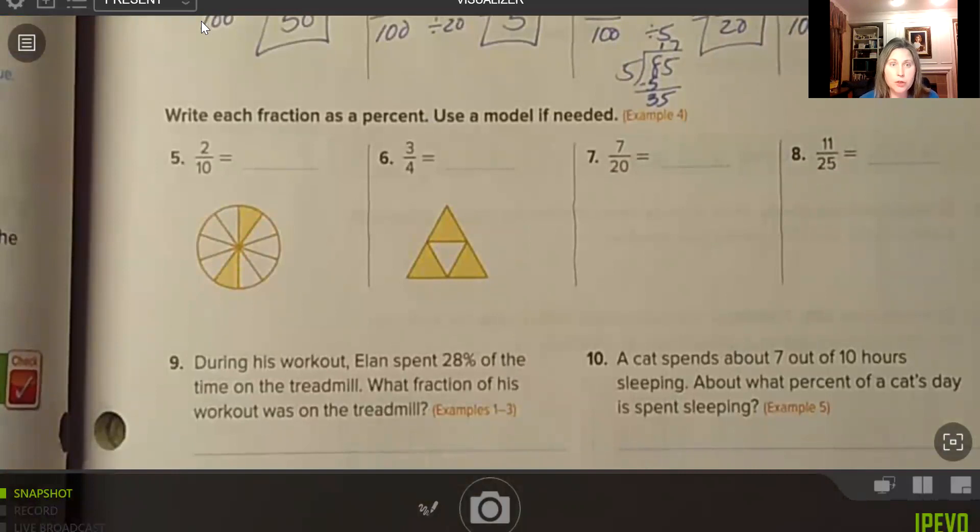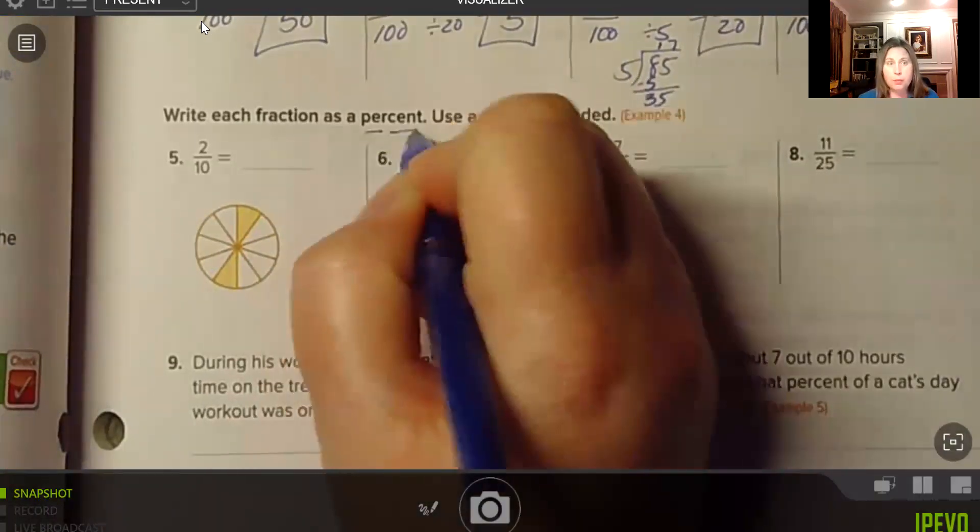Numbers 5 through 8, write each fraction as a percent. Use a visual model if needed. So I scale these up to 100 for a denominator, want them to be per 100, a percent.